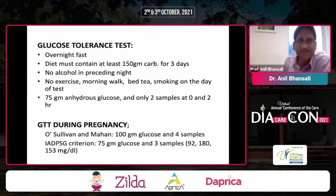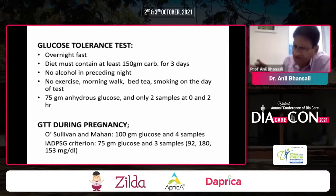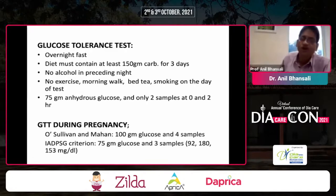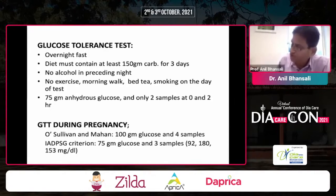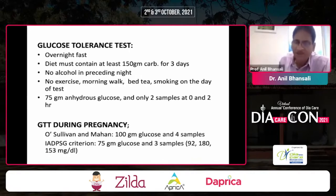The GTT guidelines state it is not recommended for routine diagnosis but for special situations, establishing prediabetes, or reconfirming diagnosis in high-risk conditions. It should be conducted after a proper fast, with a diet containing at least 150 grams of carbohydrates for three days prior, no alcohol the preceding night, no exercise, morning walk, tea, or smoking on the day of the test. Use 75 grams of anhydrous glucose, or 82.5 grams if using monohydrous glucose. Only two samples are required at zero and two hours. During pregnancy, 100 grams of glucose and four samples are used; with IADPSG criteria, 75 grams and three samples with cutoffs of 92, 180, and 153.